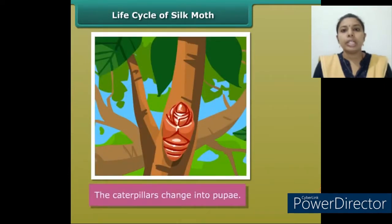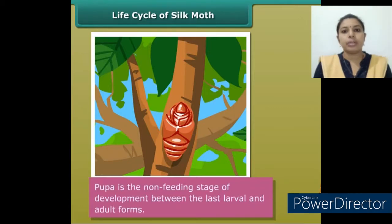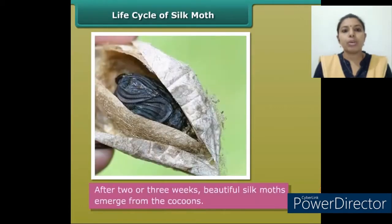Inside the cocoon, the caterpillar changes into a pupa. The pupa is the non-feeding stage of development between the last larval and adult forms. After two or three weeks, beautiful silk moths emerge from the cocoons.